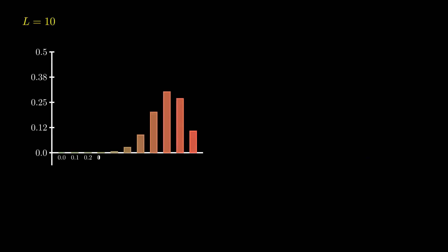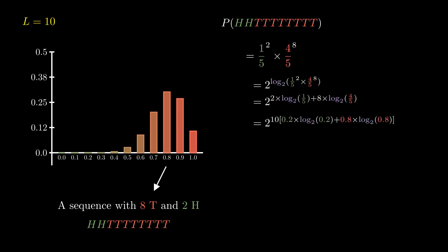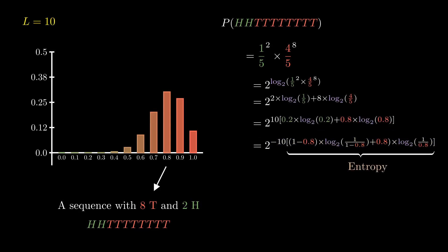Let us go back to the case of 10 tosses. We observe that the most probable event is the one when the fraction of tails equals its probability. Taking a sequence with 8 tails and 2 heads and computing its probability gives us (1/5)^2 × (4/5)^8, since the tosses are independent. By exponentiation, taking logarithm, and a series of modifications, we arrive at an expression whose key exponent term is special and is called entropy, denoted by H and is a function of probability.